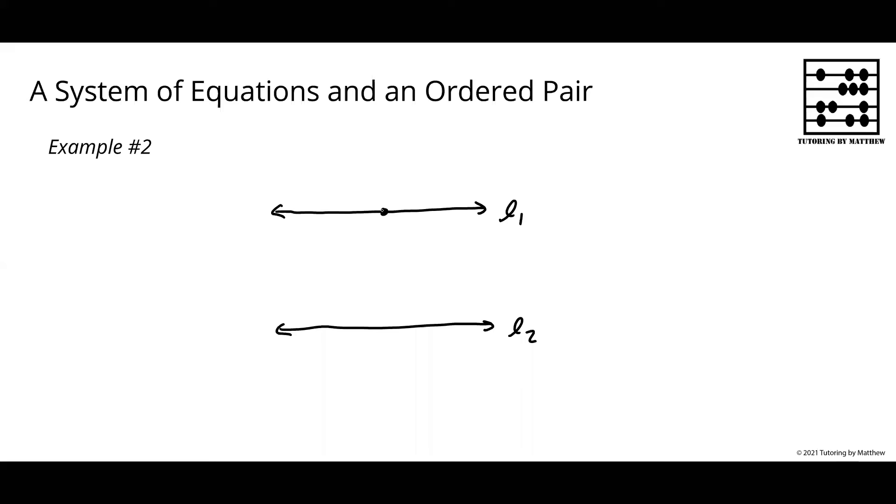Notice the point could be on line one and a solution to the equation for line one. Or a point could be over here on line two and therefore a solution to equation for line two. And a third option is that it could be somewhere between them, outside of them, but it is neither on line one or line two.